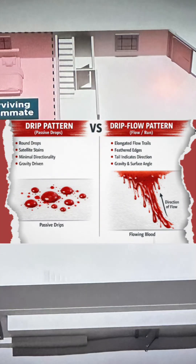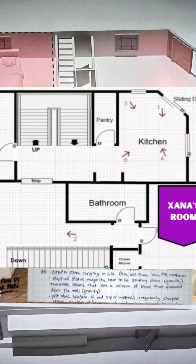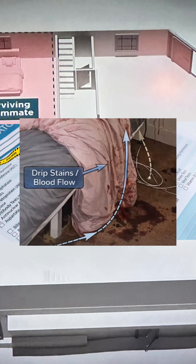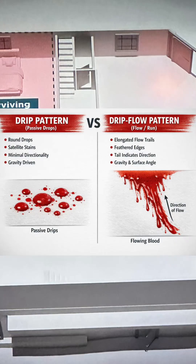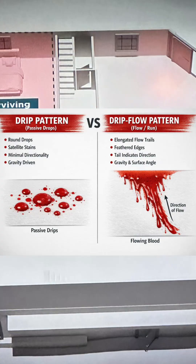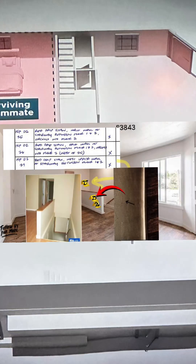Drip patterns are caused by blood which falls straight down under gravity alone with no lateral movement of the source. In the Idaho 4 case, the location in the bedroom floor near and around the bed area is where you have blood that has fallen vertically from a stationary or briefly moving source — for example, wounds or a bloodied object held above the floor like a knife or weapon. This suggests blood was actively dripping while the source was not moving rapidly. Drip flow patterns, by contrast, occur along floor surfaces where blood encounters slight slopes or transitions, caused by gravity acting on pooled or dripped blood, indicating that time lapsed after deposition allowing blood to move naturally.